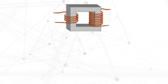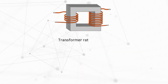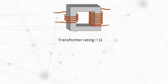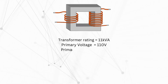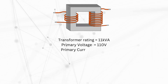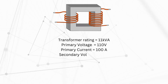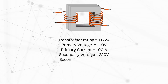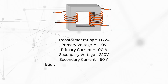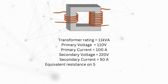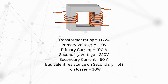Let's break it down with an example. Consider a single-phase step-up transformer with a rating of 11 kVA, primary voltage of 110 volts, and primary current of 100 ampere. Secondary voltage is 220 volts, secondary current is 50 ampere, equivalent secondary resistance is 5 ohms, and iron losses are 30 watts.